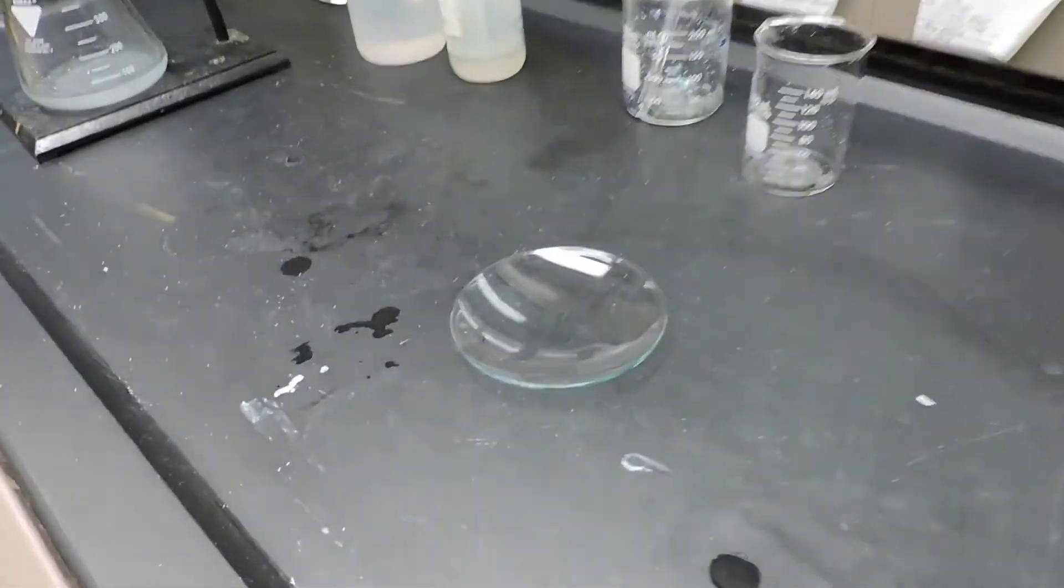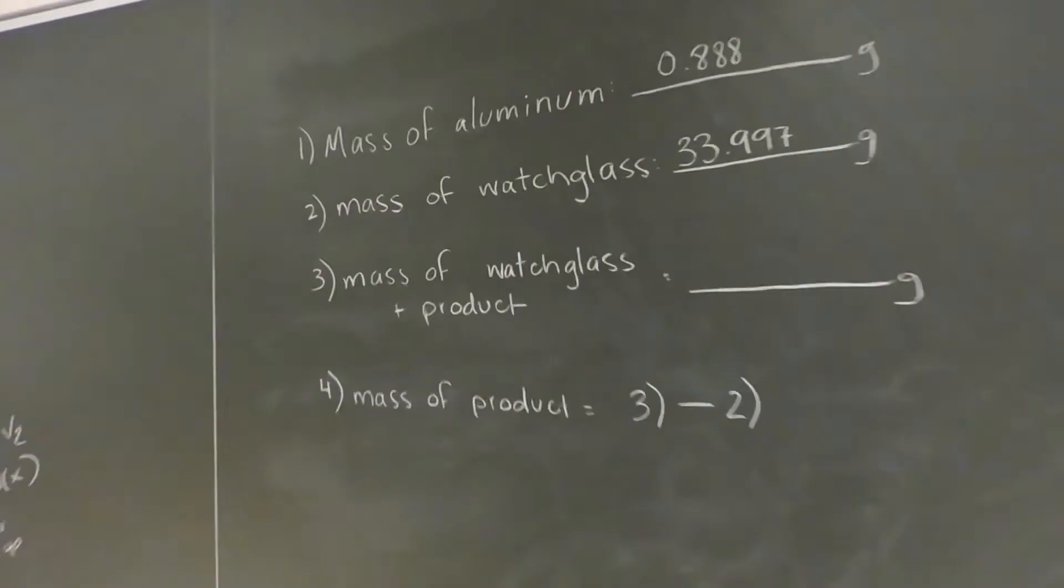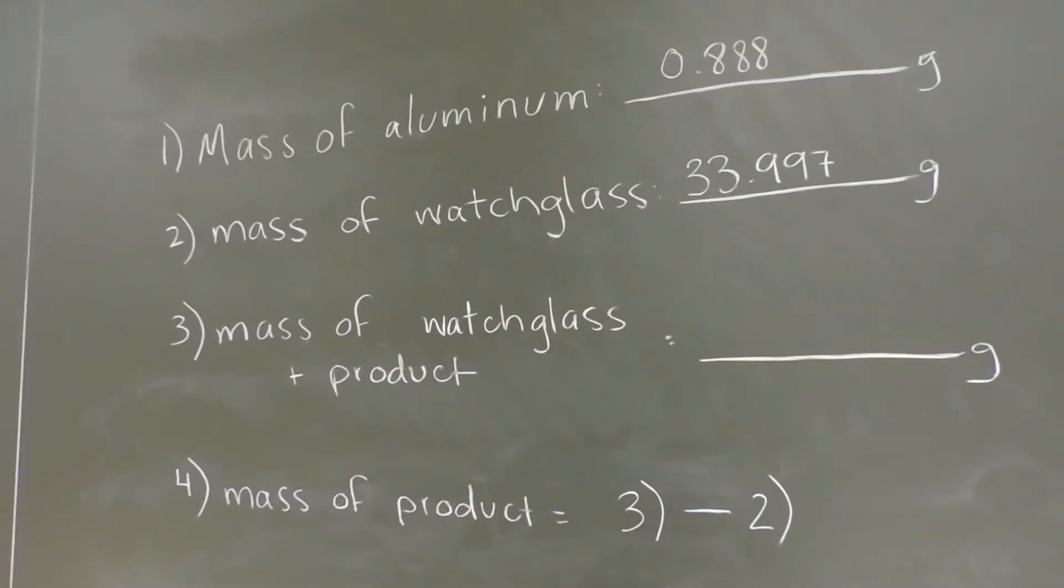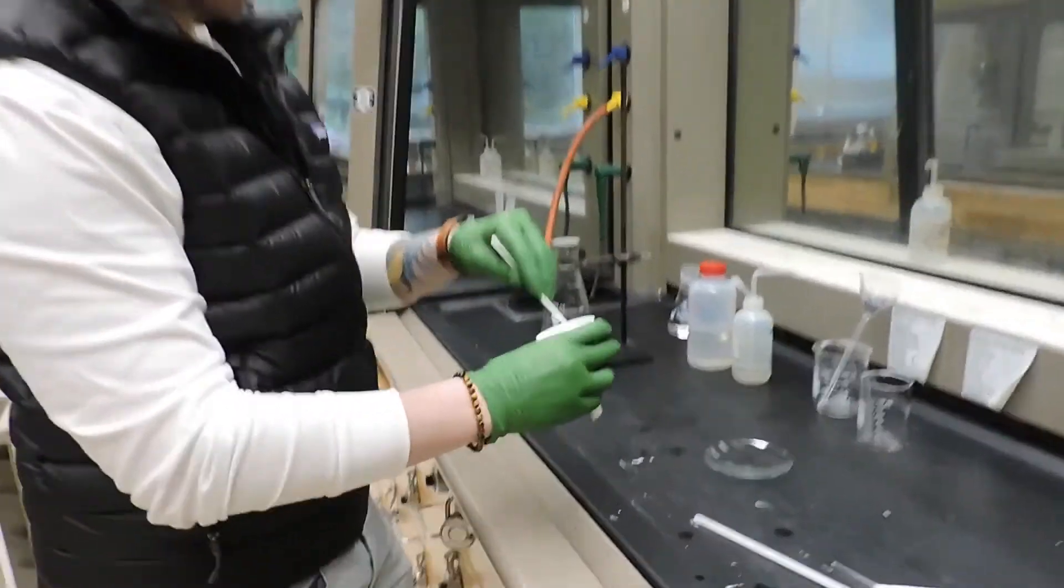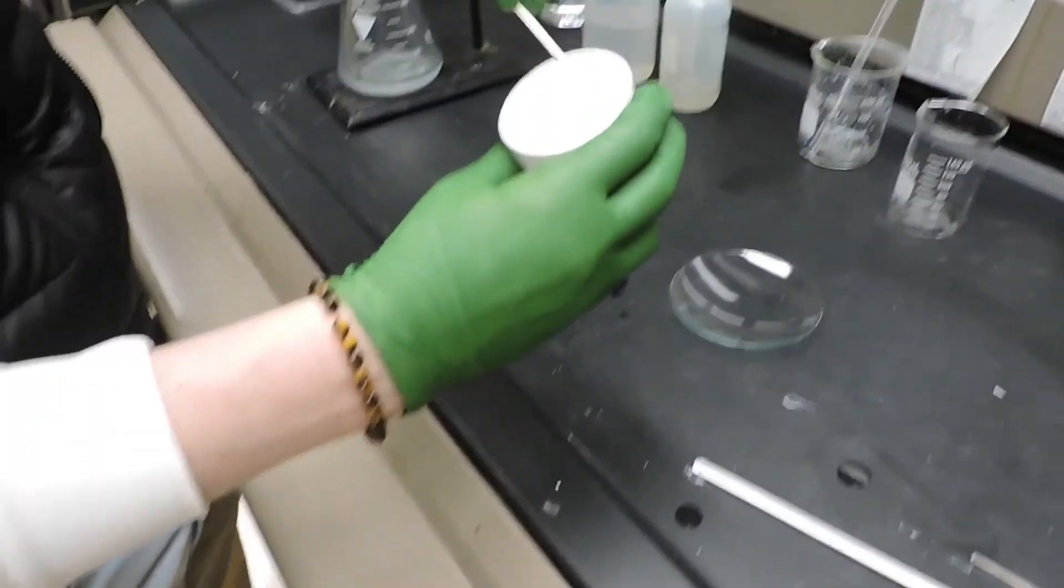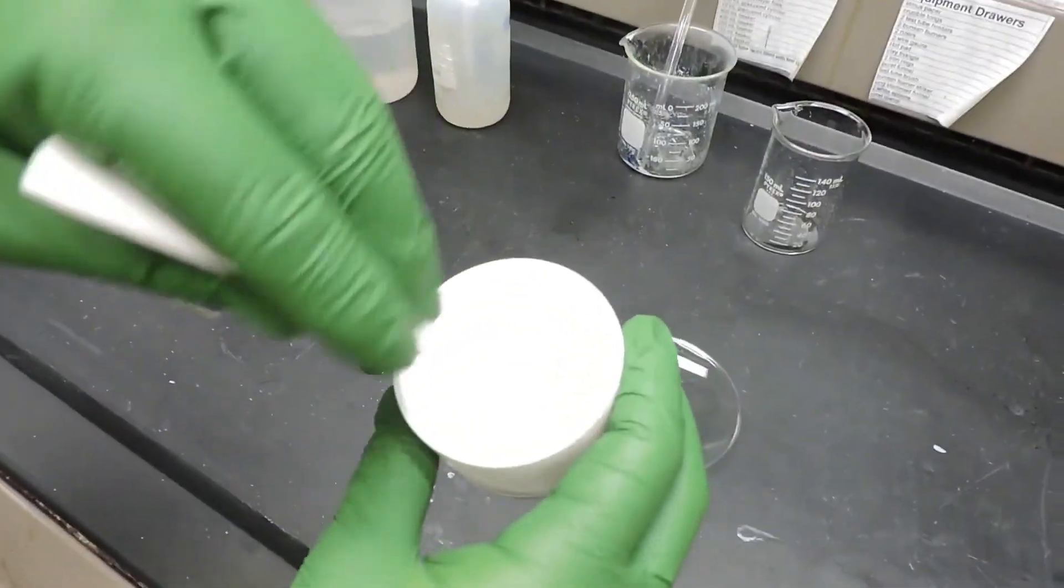So we've weighed a dry watch glass, and that mass is 33.997 grams. So now we're going to take our dry alum from the vacuum setup and use a spoon to scoop it onto the watch glass.